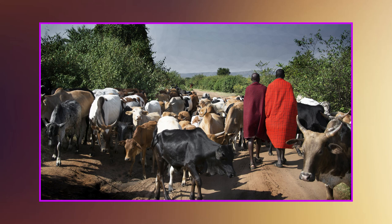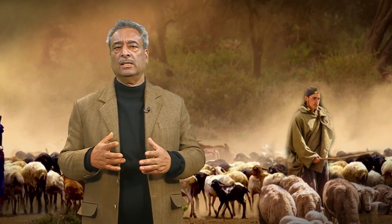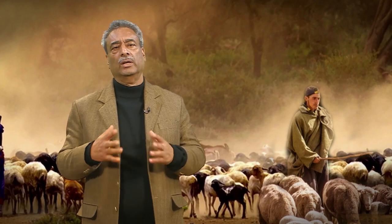A kinship network based on lineage appears to have guided the pastoral communities. The maintenance of large animal herds was labor-intensive but could be managed thanks to the flexibility of resources — when needed, the herd was reduced in size through gifts or repayments to agriculturists, and the original size would be quickly restored through reproduction. With this, we come to the conclusion of today's lecture. Hope you have understood every aspect of the subject — see you in another class, goodbye and good luck.